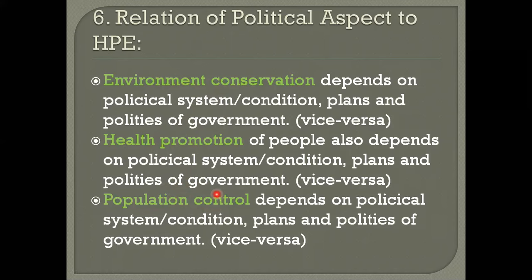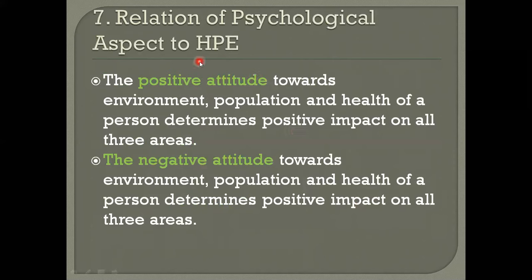The last relation is of the psychological aspect to health, population, and environment. Psychological aspect involves two things: way of thinking and way of behaving. If there is a positive attitude towards environment, population, and health, there will be a positive impact on all three areas. But if people have negative attitudes, they will not be motivated to improve their health, control the population, or conserve the environment.